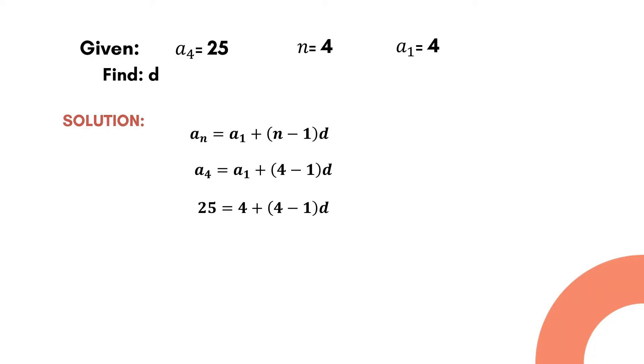Next is to simplify the equation. So we simplify first the expression inside the parenthesis, that is 4 minus 1 times d, which is simply 3d. There we have 25 is equal to 4 plus 3d.